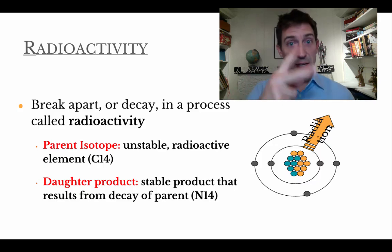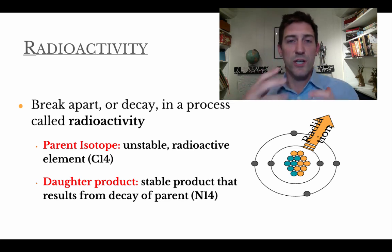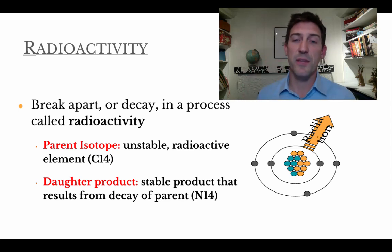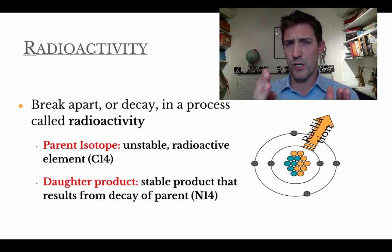When we're talking about radioactivity, two terms that we really need to understand, the first one being the parent isotope. So let's say we have carbon-14 like we looked at before. It is a radioactive substance, and it is going to decay. So it's going to change and give off particles, we call that radiation, until it turns into something stable.